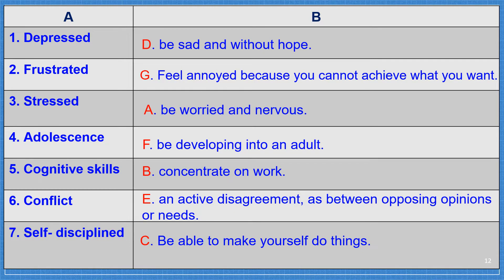Number 1: depressed — D: be sad and without hope. Number 2: frustrated — G: feel annoyed because you cannot achieve what you want. Number 3: stressed — A: be worried and nervous. Number 4: adolescent — F: be developing into an adult. Number 5: cognitive skills — B: concentrate on work. Number 6: conflict — E: an active disagreement between opposing opinions and needs. Number 7: self-discipline — C: be able to make yourself do things.